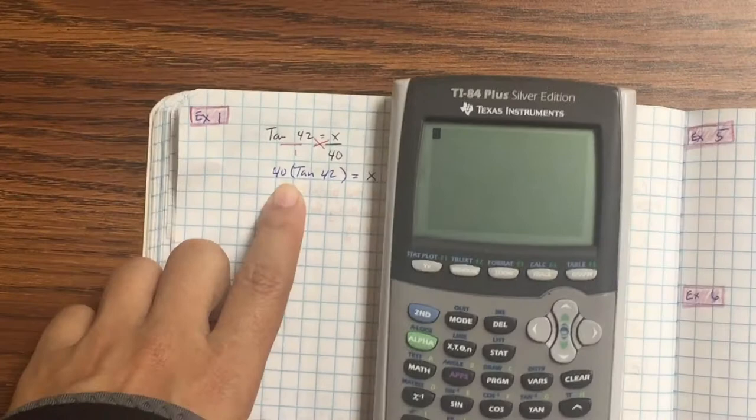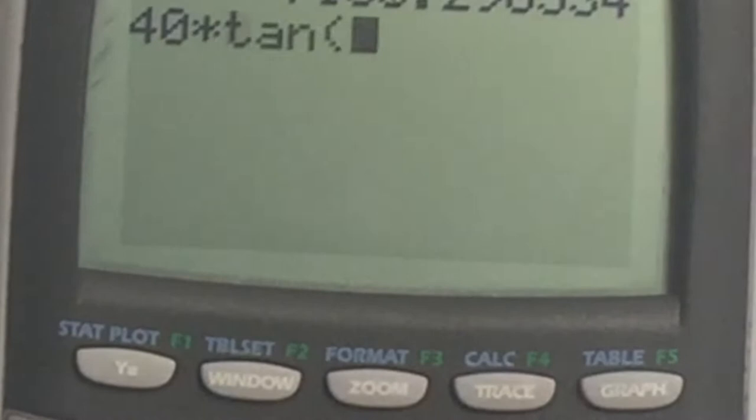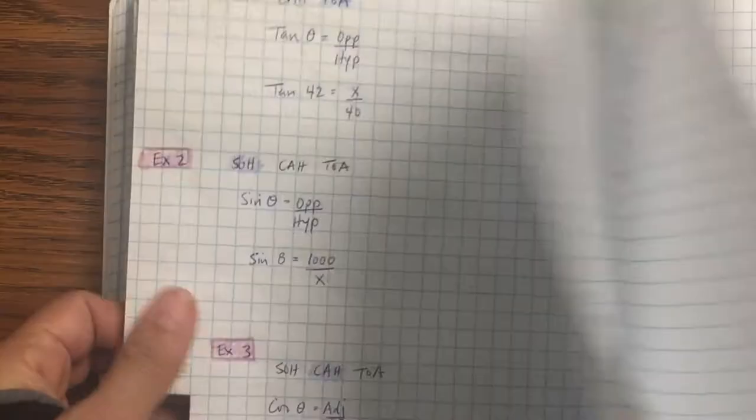And we just did this in the previous step. So you're going to do 40 times tan, so hit the tan button, and then 42, and then press enter. So 36.01. And then the question said round to the nearest tenth, so it's going to be 36.0. This is a listening check, coloring 36 feet.